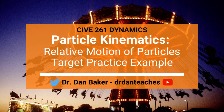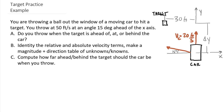Hello, students of Dynamics. This is Dr. Dan Baker with an example looking at relative motion of particles. The specific example: if you're going to throw a ball out the window of a moving car and want to hit a target. You can throw at 50 feet per second, and due to the geometry of how you sit in the car, you'll throw at an angle 15 degrees ahead of the x-axis, which is horizontal.